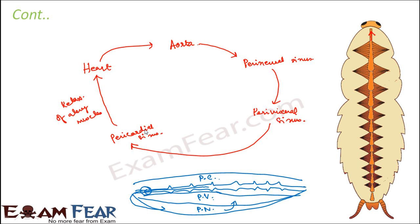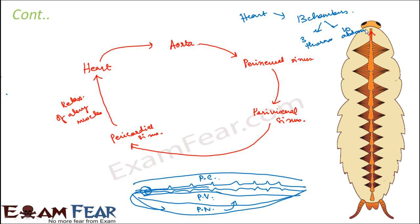The heart of a cockroach is located in 13 chambers: three chambers are in the thorax and the remaining 10 chambers are in the abdomen. So three chambers in the thorax and ten in the abdomen.